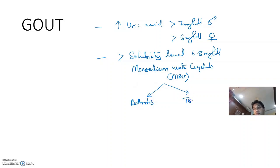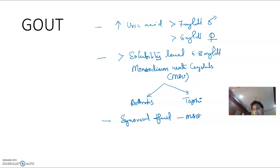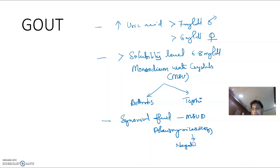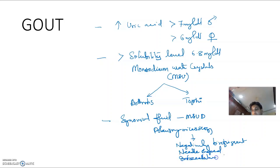This deposition leads to arthritis and subcutaneous deposits called tophi. If we check the synovial fluid using polarizing microscopy, we will see these MSU crystals as negatively birefringent, needle-shaped, and intracellular crystals, which appear yellow to our eyes.